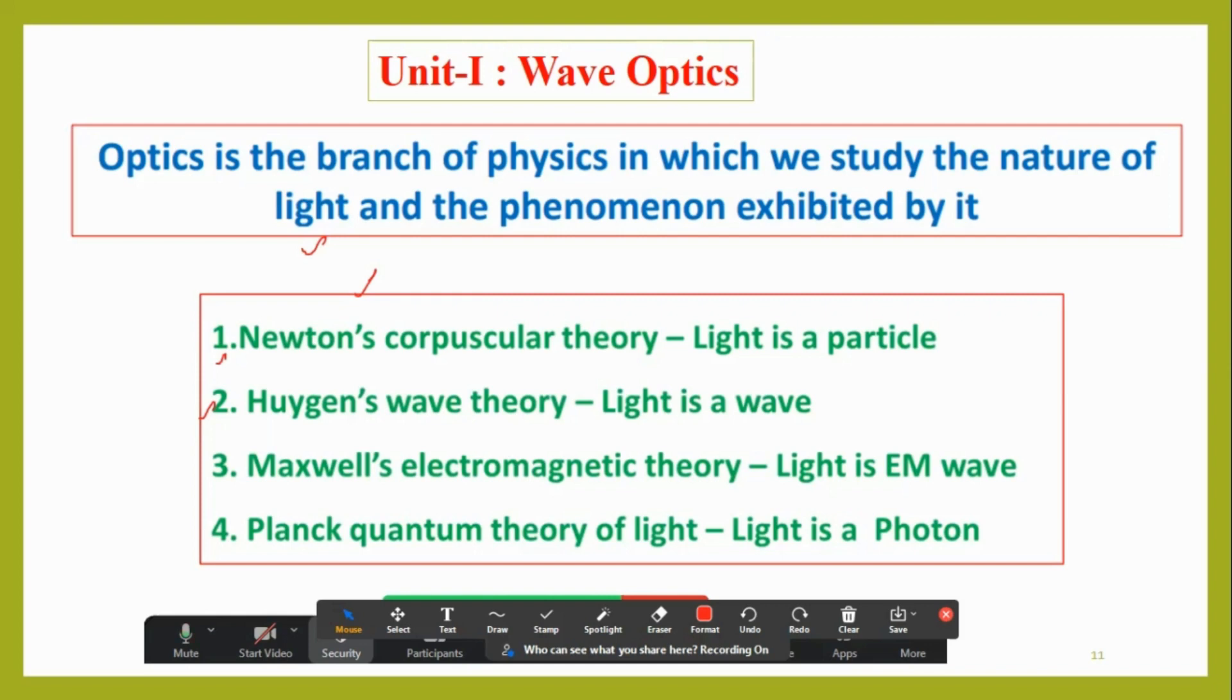There are four major theories about light. It started with Newton's corpuscular theory, where he proposed light is a particle and developed the theory based on it. After some time, Huygens introduced the concept of wave and told that light is a wave. Then Maxwell's electromagnetic theory came into picture, where it tells about light as an electromagnetic wave.